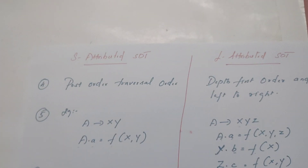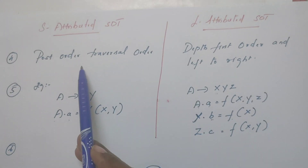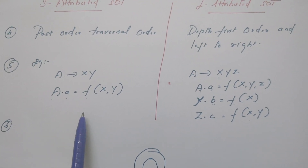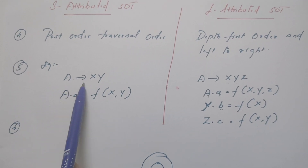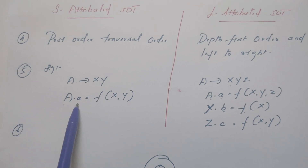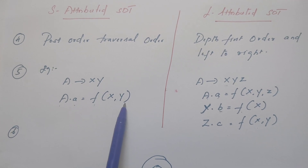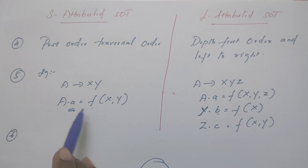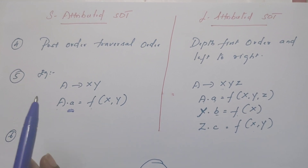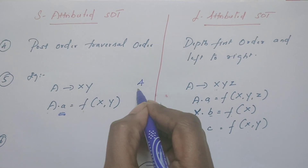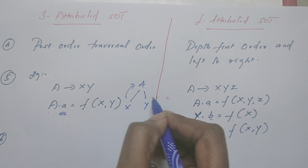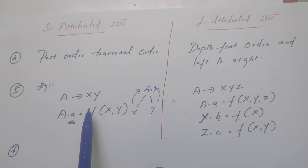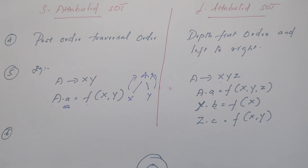Let us continue seeing the differences. As stated, S-attributed SDT is evaluated in post-order, whereas L-attributed is evaluated in depth-first left-to-right order. Now let us consider an example for S-attributed SDT. A derives XY is a production rule, and the value of A is computed by applying some function on X and Y. This rule is part of S-attributed SDT because A is a synthesized attribute — its value is obtained from X and Y, which are its children. If every rule in the grammar follows this pattern, we can say the entire grammar is S-attributed SDT.